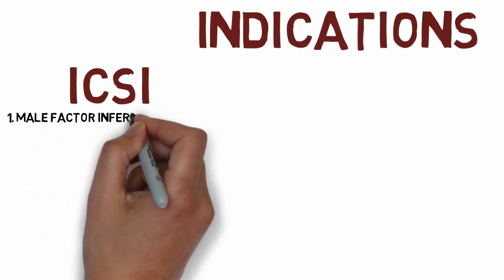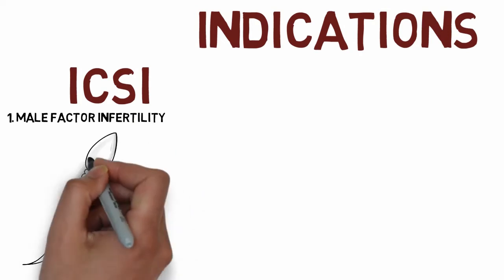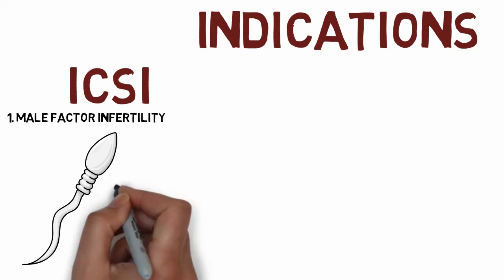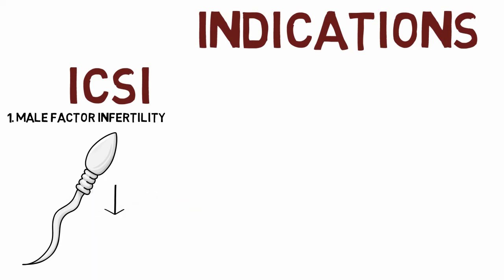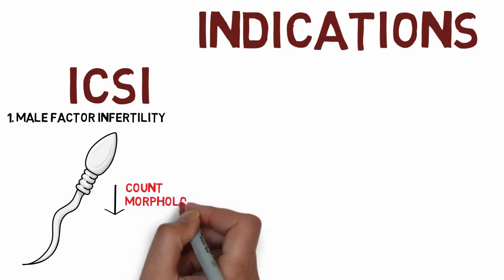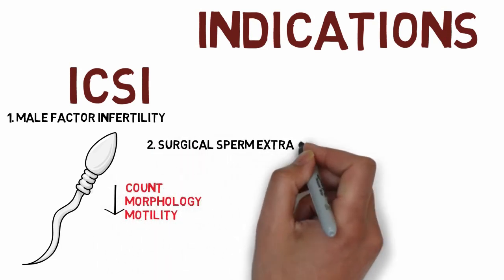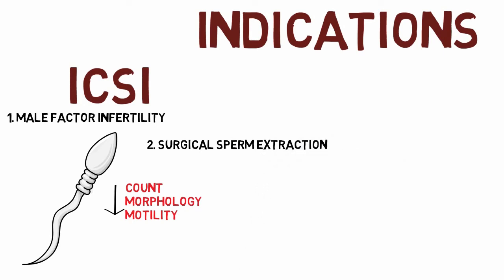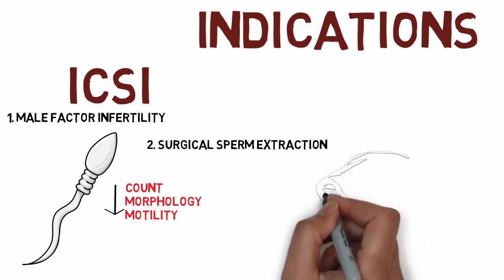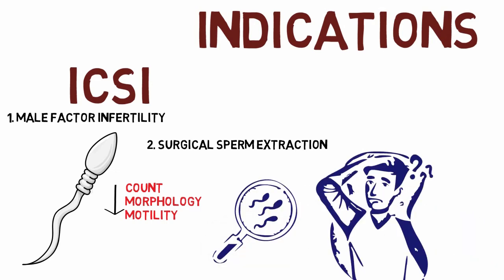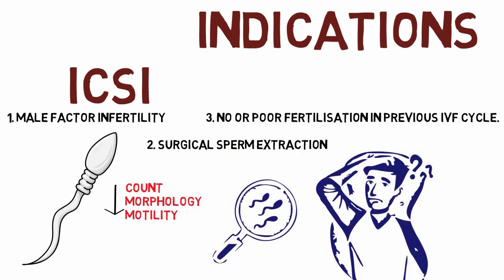When is ICSI indicated? ICSI is indicated in cases of male factor infertility, where the male partner has either low sperm count, low sperm morphology, or low sperm motility. ICSI is also recommended when sperm are retrieved surgically, either through the epididymis or the testis. Additionally, ICSI is the preferred method when a previous IVF cycle using conventional IVF led to no fertilization or very poor fertilization — in such cases, ICSI is well indicated.